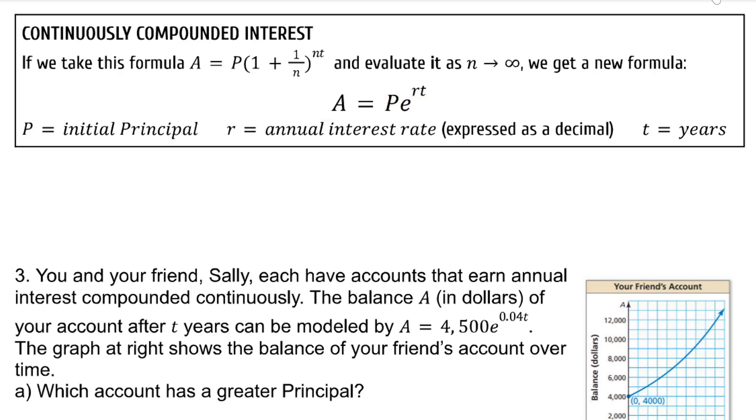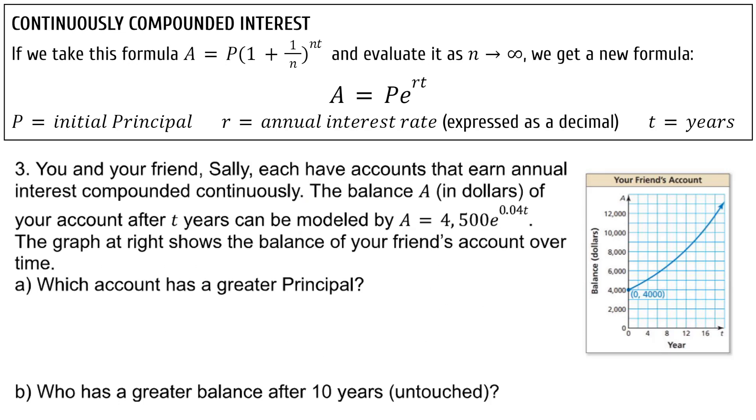P is the initial principal. r is the annual interest rate. And t is the number of years the money is in the account. e is obviously the natural number 2.718 and so on.